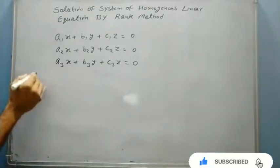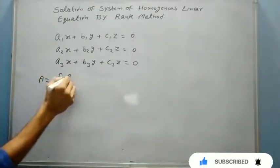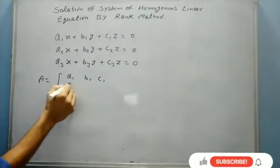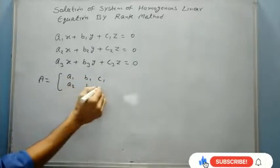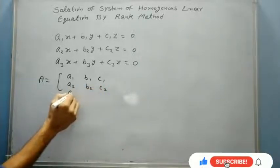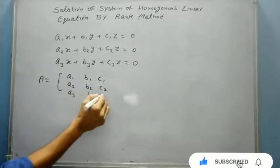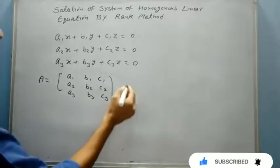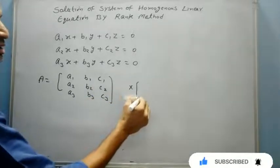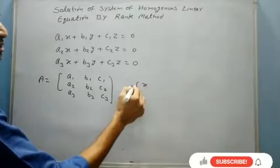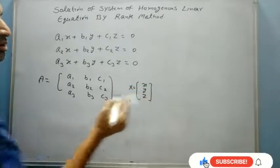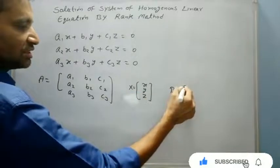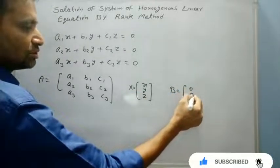Matrix A will be A1, B1, C1, A2, B2, C2, and A3, B3, C3. And we have variables x, that is x, y, z, and the matrix B which is a null matrix or zero matrix you can say.